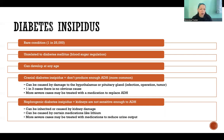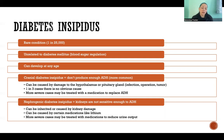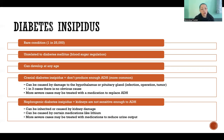The cranial form — where you're not producing enough ADH — can be caused by damage to the hypothalamus or pituitary gland, such as from infection, surgery, or a tumor. However, in one in three cases there's no obvious cause and it happens spontaneously. The nephrogenic form — where kidneys aren't responding to ADH — can be inherited or caused by kidney damage, and can also be triggered by certain medications, particularly lithium.